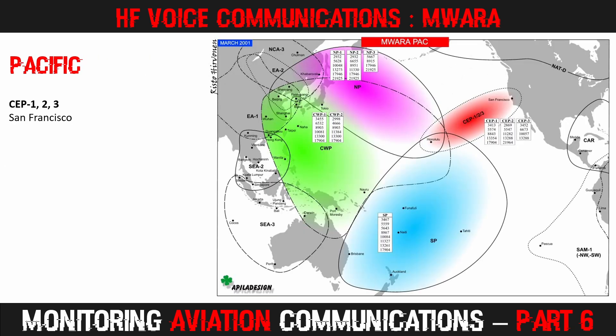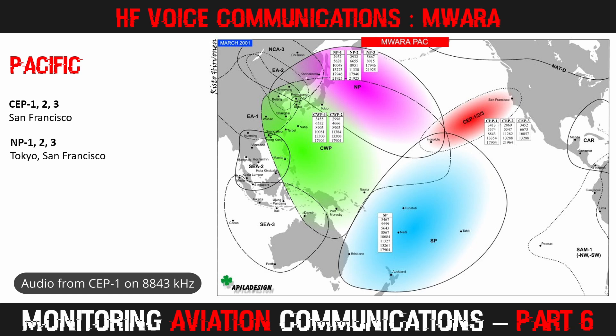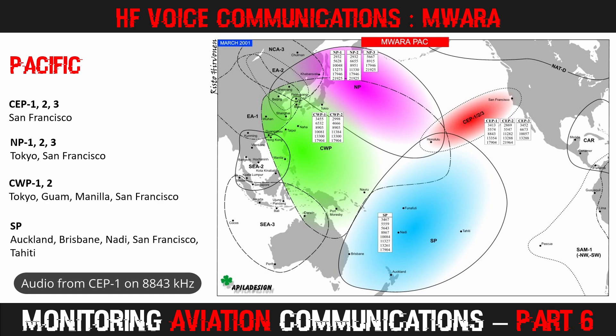The Pacific frequencies still get plenty of use, especially in the busy CEP corridor, or Central East Pacific corridor, between the US West Coast and Hawaii. NP stands for North Pacific, with SP being the South Pacific frequencies. At this time in history, the CWP — Central West Pacific — and North Pacific frequencies get a lot of radio check-ins from cargo airlines moving freight between Asia and North America.